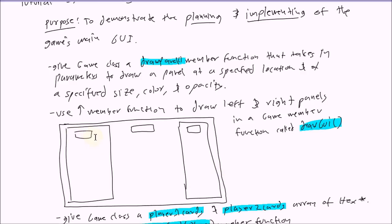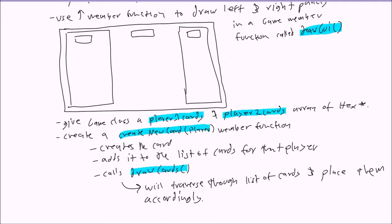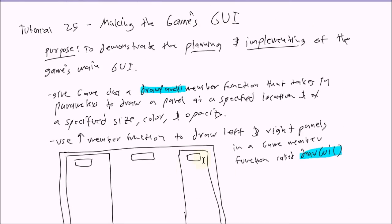In addition to that, drawGUI will draw text here, here, and here. Furthermore, we're going to give the game class two additional attributes: Player1 cards and Player2 cards. These are basically lists of hexes that the player can place on the board. We're also going to create a createNewCard member function that will create a new hex for a player and add it to one of these lists, and a drawCards member function that will traverse through these lists and display the cards on screen. That's an overview of our plan. Let's jump right in and start by implementing drawPanel and drawGUI.